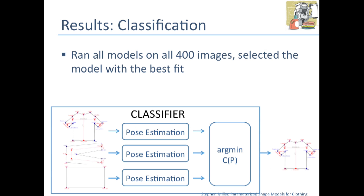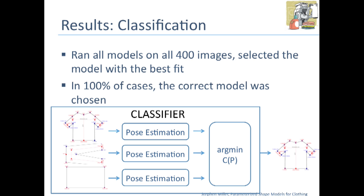The next question is how we can predict what model it is. To do this, we ran all models on all 400 images and selected the one that yielded the best fit, providing a method of classification. We found that in 100% of cases, the correct model was chosen. So no matter what, for any image, the correct model was the one that fit best — you don't need to know ahead of time what class of clothing you're looking at to be able to fit the parameters.